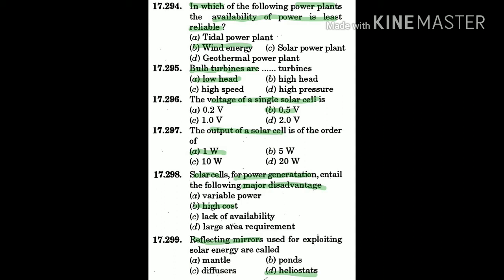Question 296: The voltage of a single solar cell is — the answer is B: 0.5 volt.